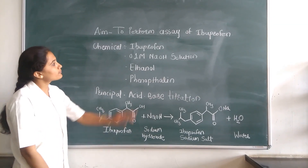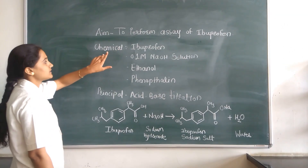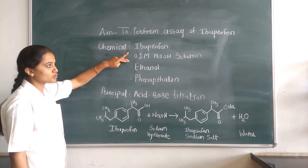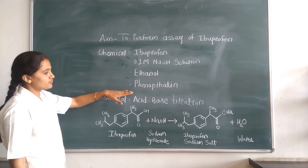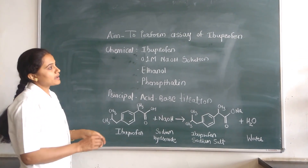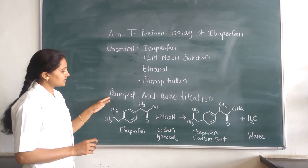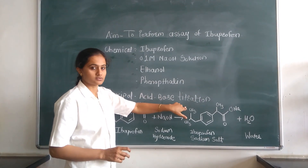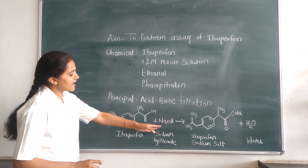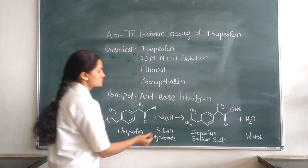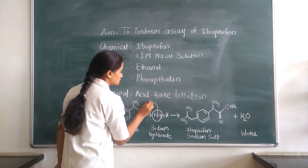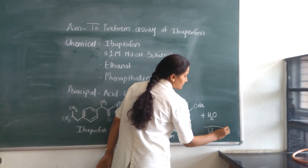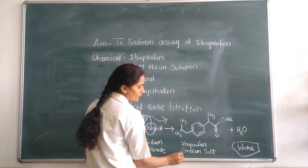Hello students. Today we perform the assay of ibuprofen. For this assay, we require the following chemicals: first is ibuprofen, next is 0.1 molar NaOH solution, ethanol, and phenolphthalein as an indicator. The principle behind this assay is that it is based upon acid-base titration. When the ibuprofen molecule reacts with sodium hydroxide, the sodium gets attached and H+ ions are removed, so water is removed from the reaction and we get the ibuprofen sodium salt.